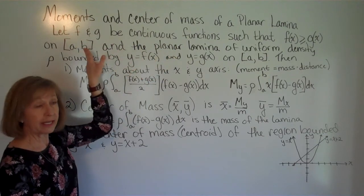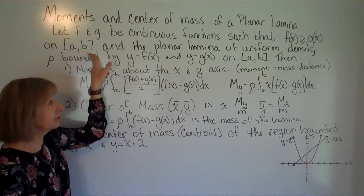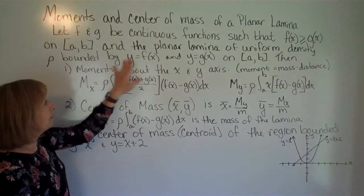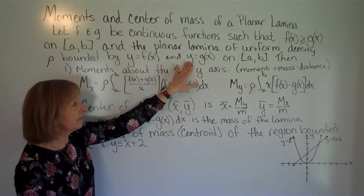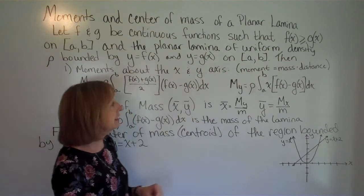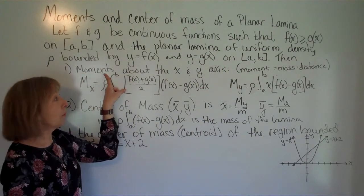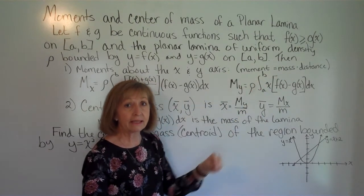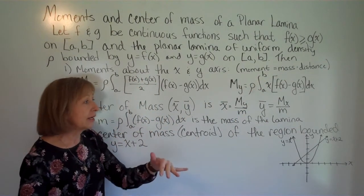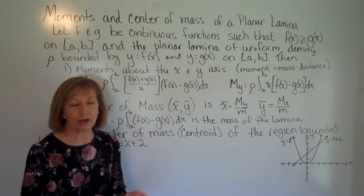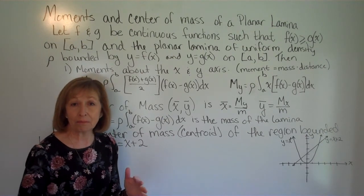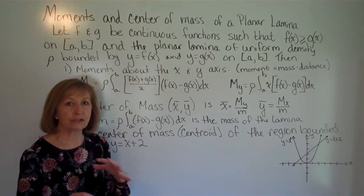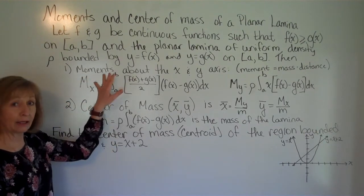Those functions are on a closed interval from a to b, so the endpoints are included. The lamina has uniform density rho and is bounded by y = f(x) and y = g(x) on that closed interval. Our moments equal mass times distance, but because the region is bounded by curves, we have to account for that in our work.